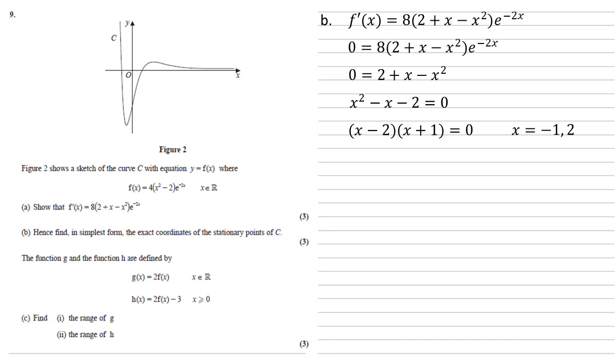We're going to put these back into f of x to find the corresponding y coordinates. So when x is minus 1, y is going to equal 4 lots of the square of minus 1, minus 2, times by e to the minus 2 times minus 1.